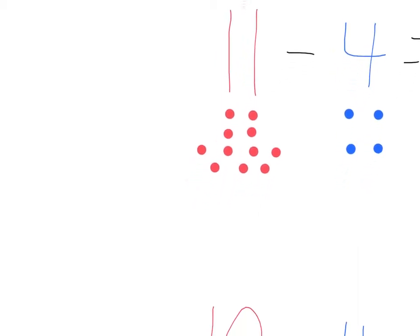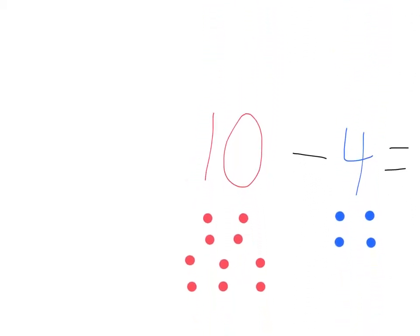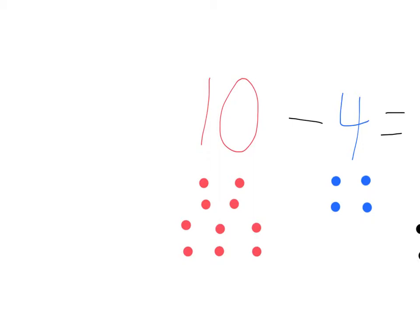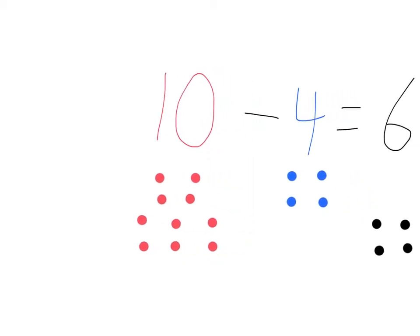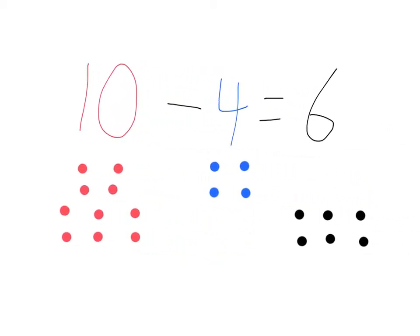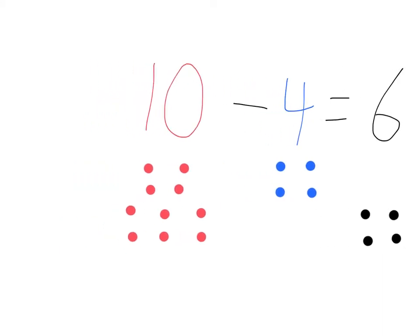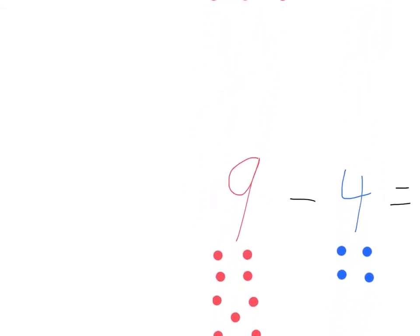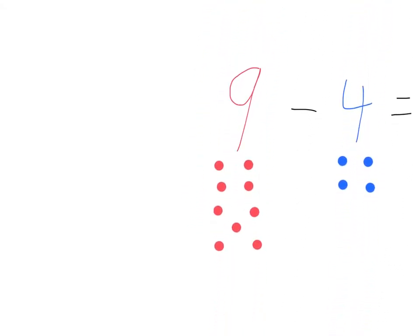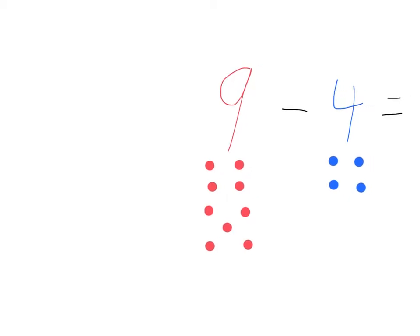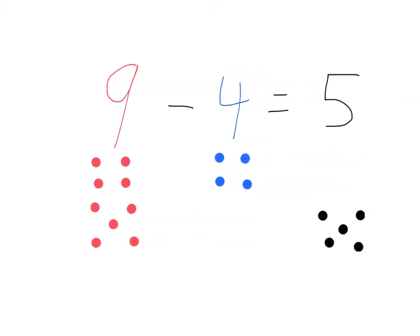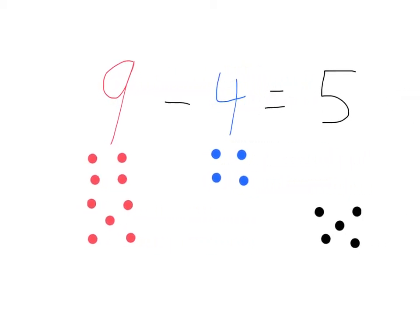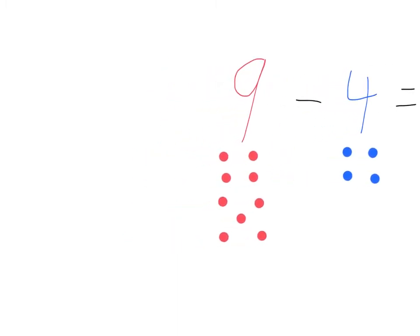Next one on our list is 10 minus 4. 10 minus 4 equals 6. Next is going to be 9 minus 4. 9 minus 4 equals 5.